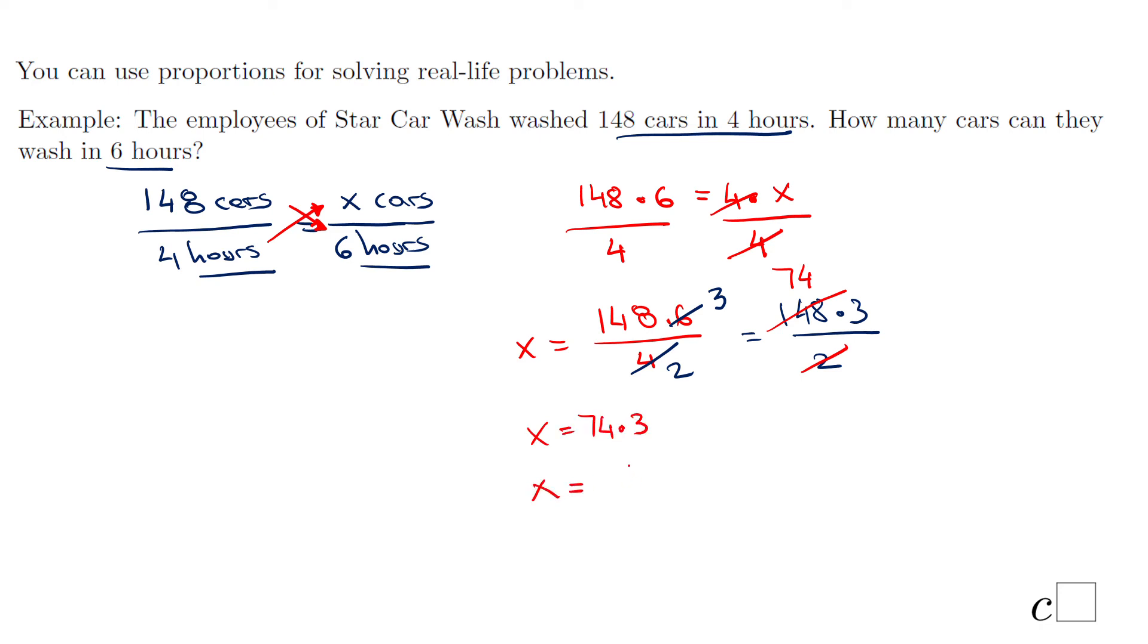We can simplify by 2. 2 goes in 148, 74 times. So the answer will be x equals 74 times 3. 3 times 4 is 12, carry the 1. 3 times 7 is 21 plus 1 is 22. So we get x equals 222 cars. That's the answer. You may want to check if it makes sense. 148 cars in 4 hours, is it possible to have 222 cars in 6 hours? The answer is reasonable.